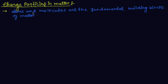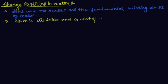Then, after describing atoms and molecules, the first question is: what is the atom composed of? Now, the atom is divisible and consists of charged particles.